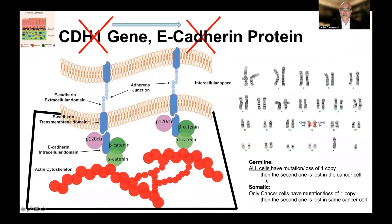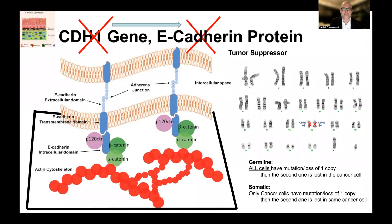In contrast, if it's a somatic problem, you didn't inherit any gene abnormality at birth, but you lost one copy in one cell during your lifetime, and then that same cell lost the second copy. This distinction is important when differentiating between an inherited or germline problem versus something acquired or somatic through one's lifetime.